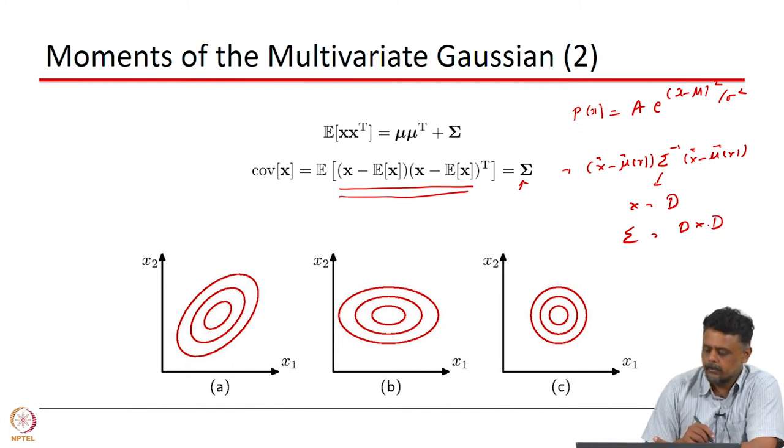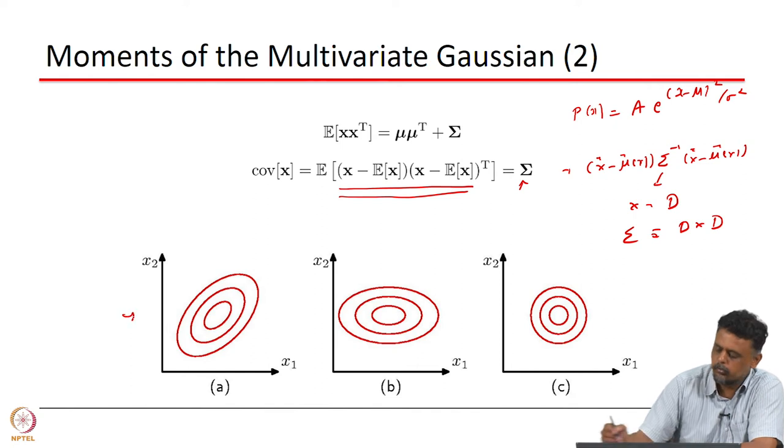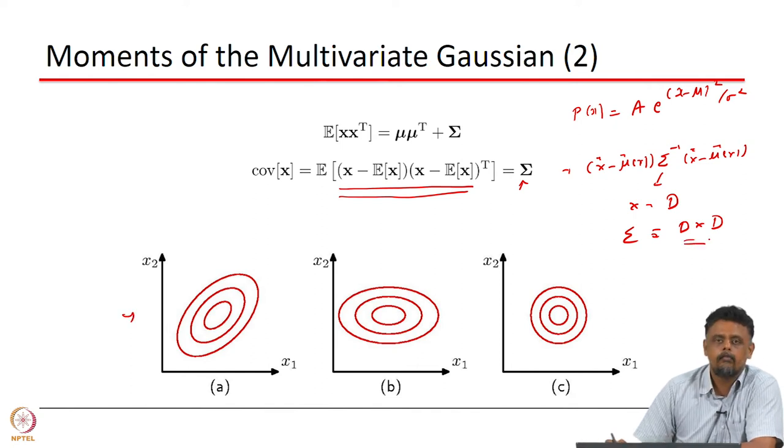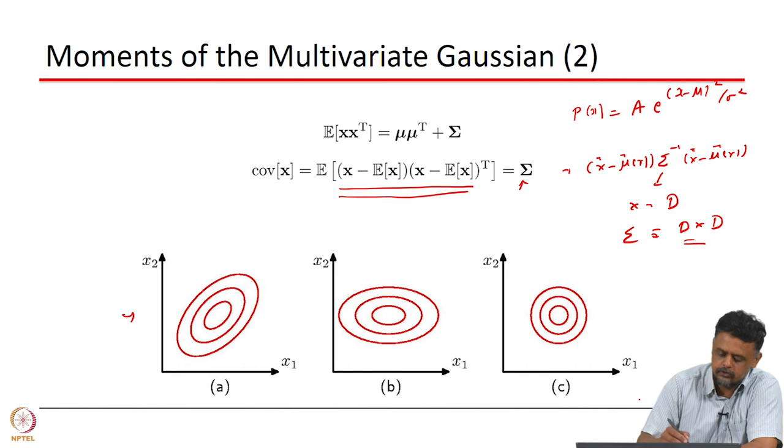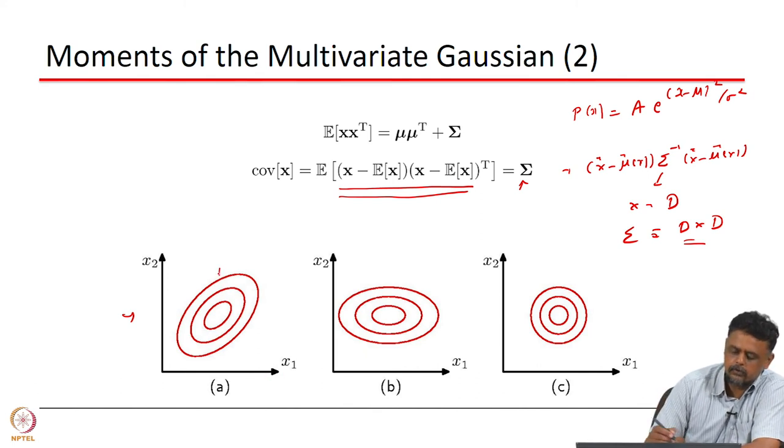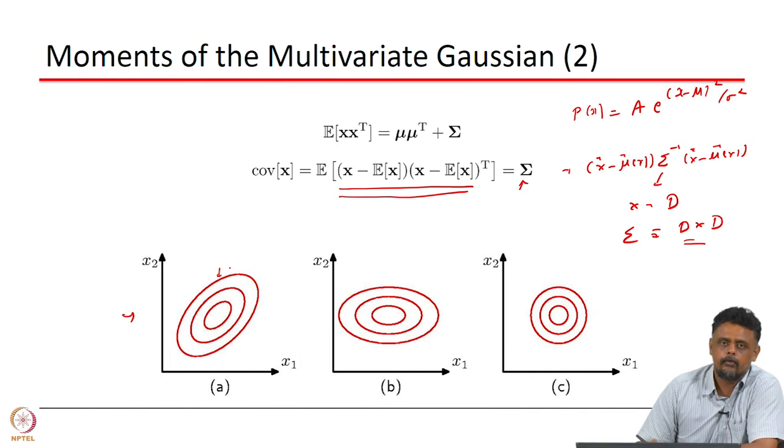What will it show you if there are different forms of this D cross D matrix? The first plot here corresponds to the most general form of D by D wherein all the elements are different, which means there is some correlation between the different features. Here we are looking at a two-dimensional variable where x1 and x2 are your features.